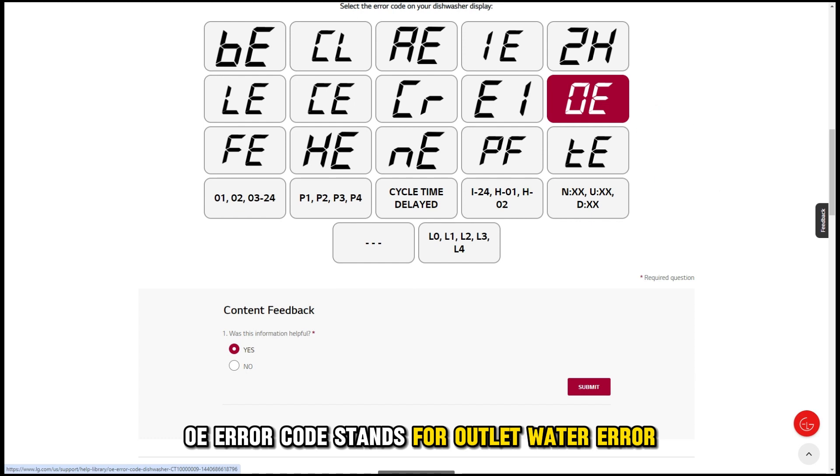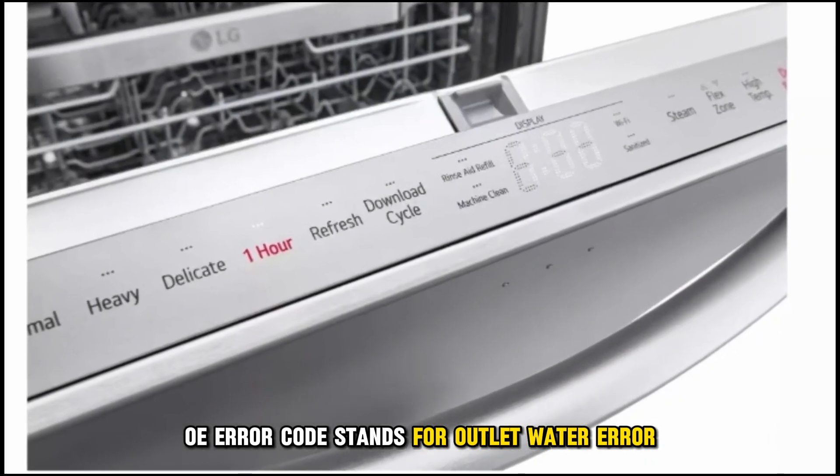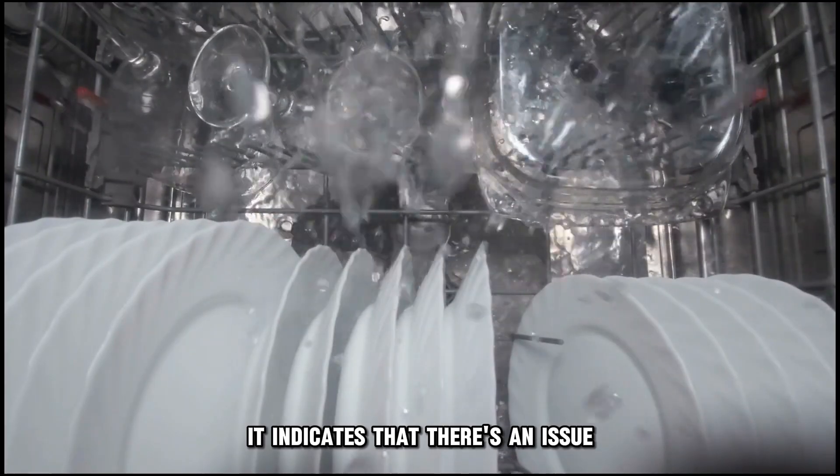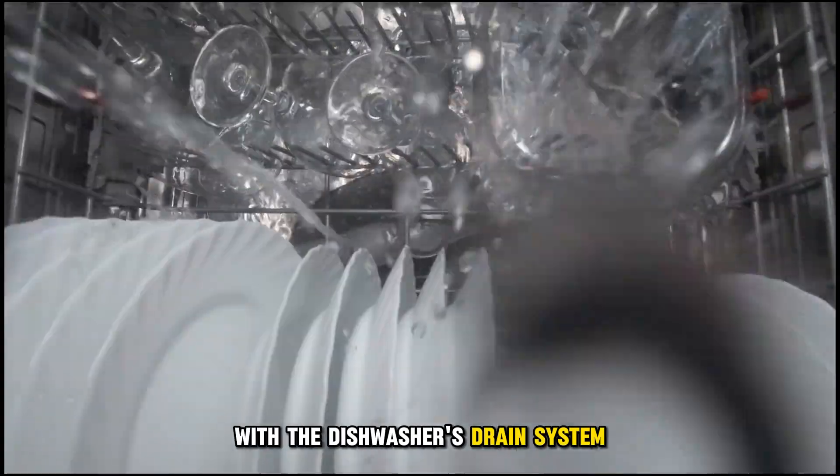OE Error Code stands for Outlet Water Error. It indicates that there's an issue with the dishwasher's drain system.